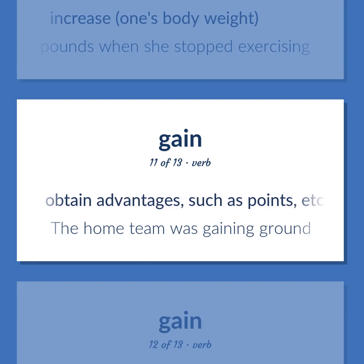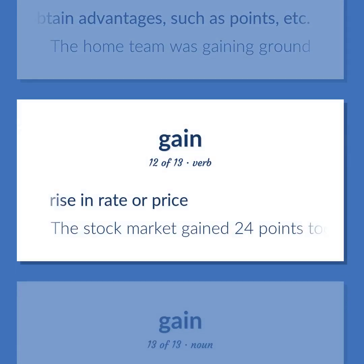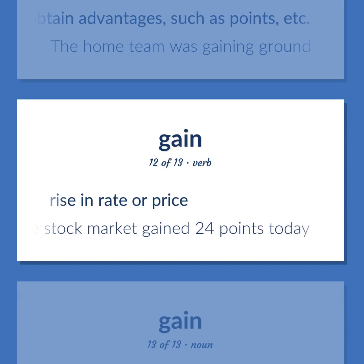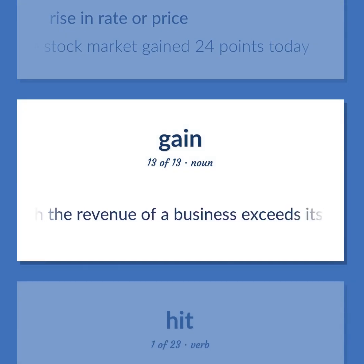Gain: Obtain advantages, such as points — the home team was gaining ground. Rise in rate or price — the stock market gained 24 points today. The amount by which the revenue of a business exceeds its cost of operating.